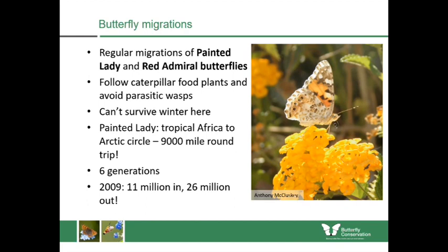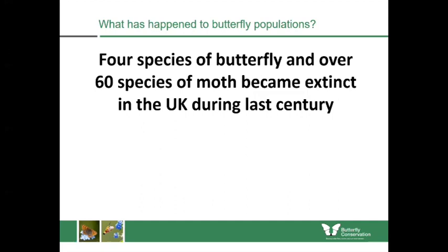In 2009, 11 million painted ladies arrived in the UK and 26 million left. In 2019 we had another huge influx, and much of it depends upon the weather in Europe determining how many we get coming to our shores.